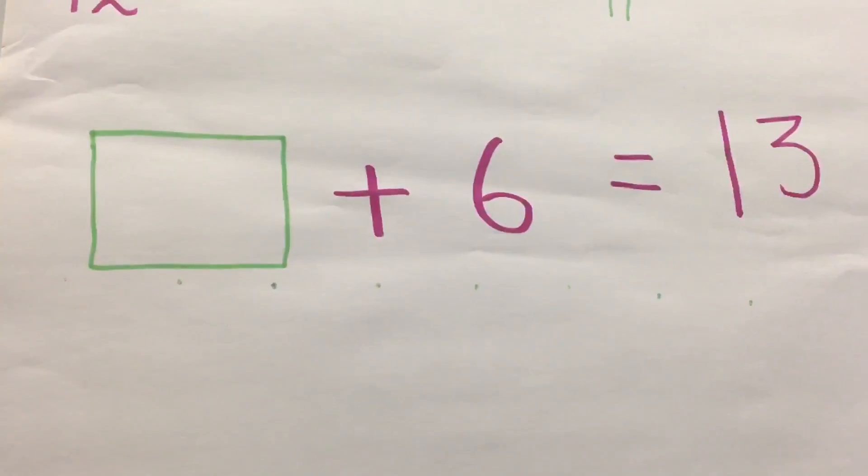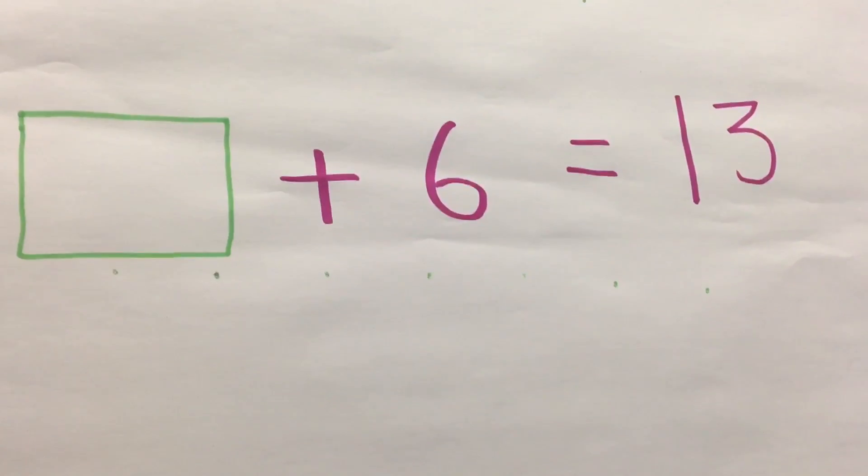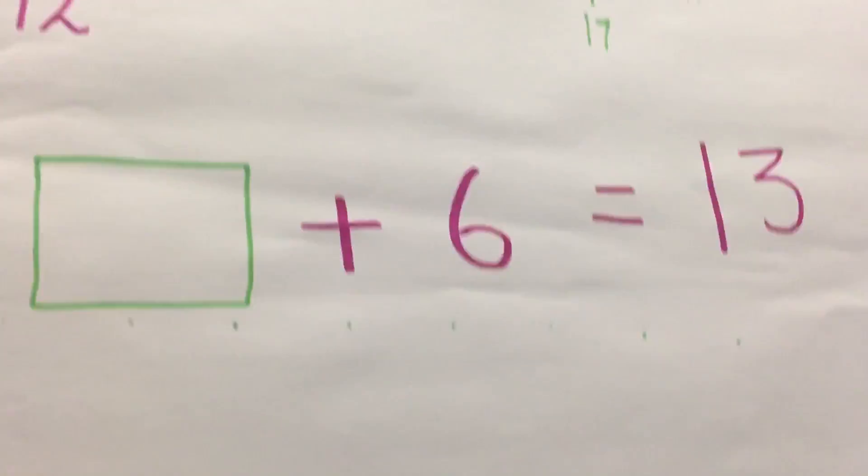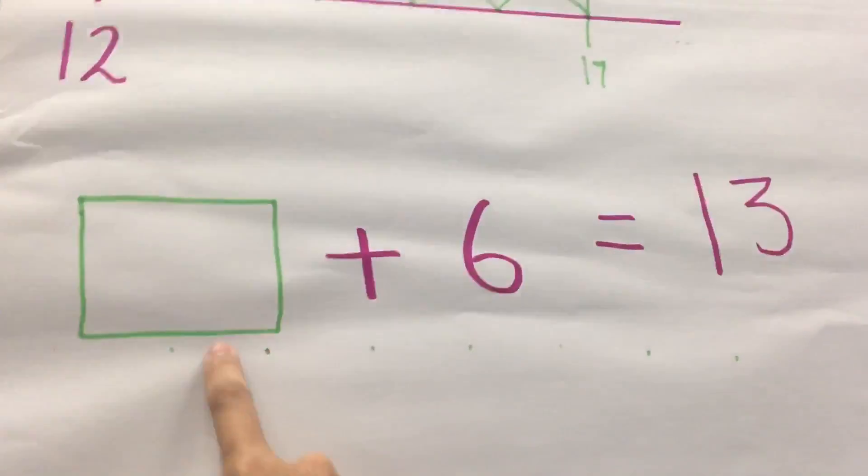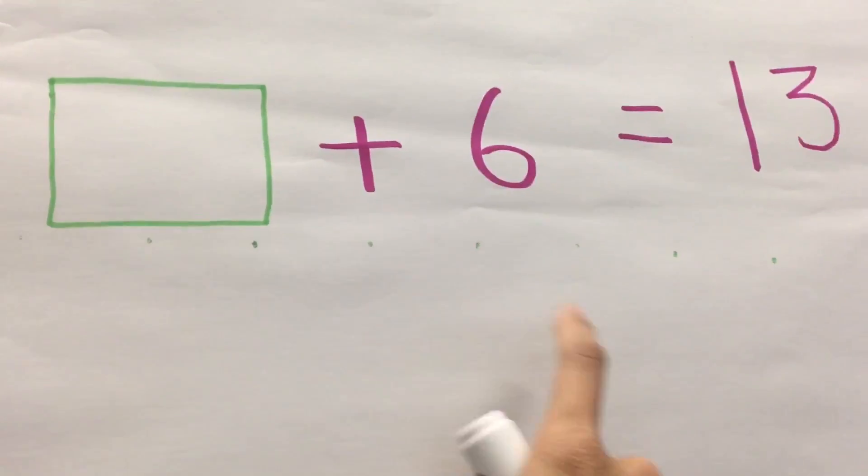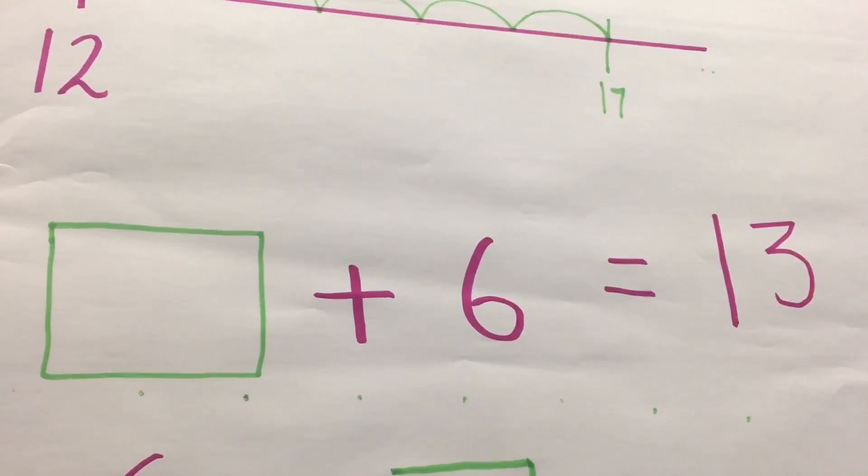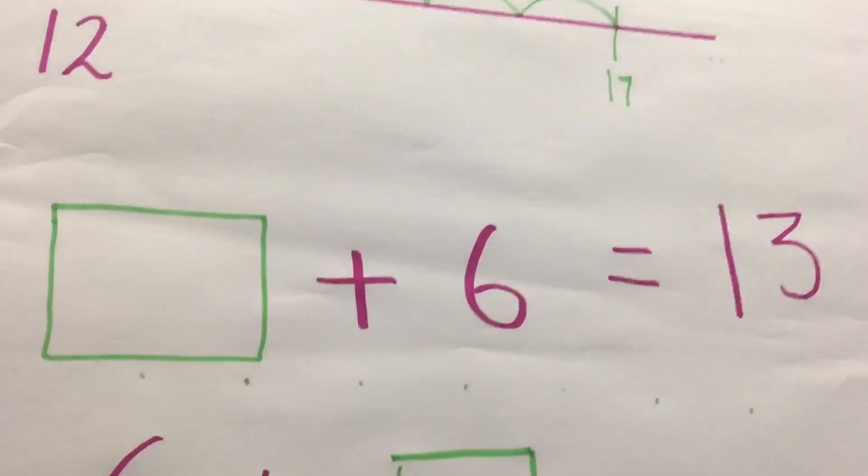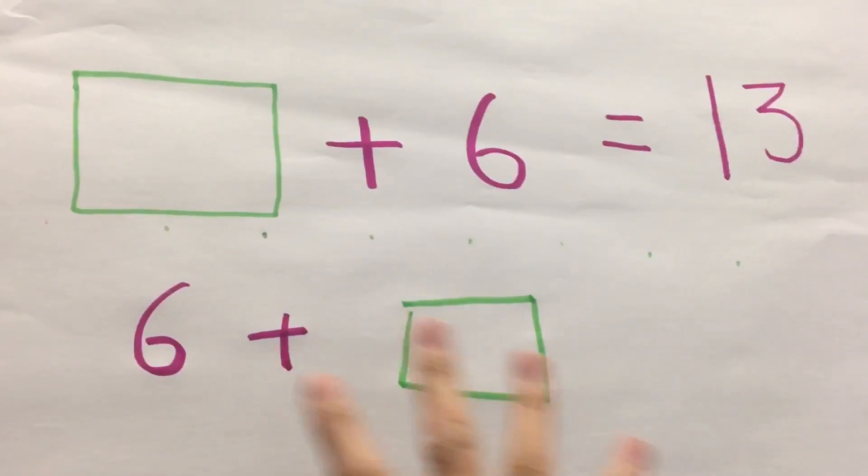So, what can we do to help children understand this? What you can do is getting them to understand that a missing number plus 6 is exactly the same as 6 plus missing number.